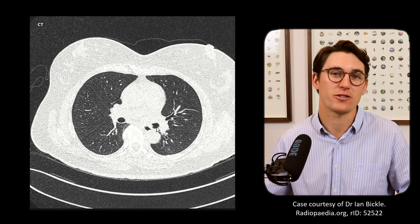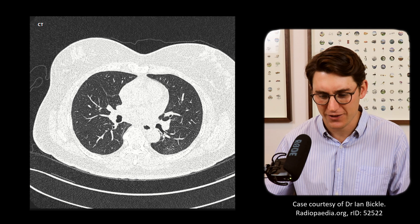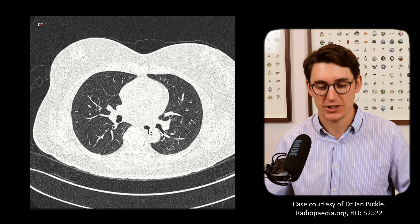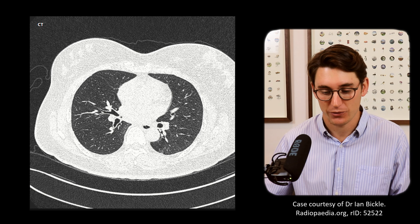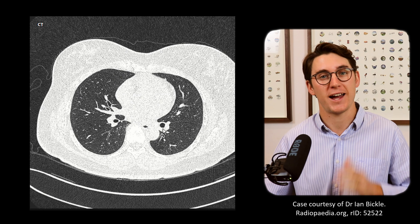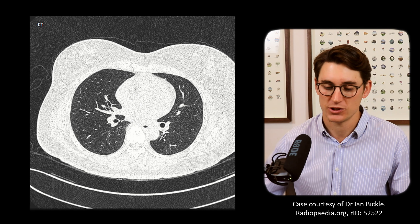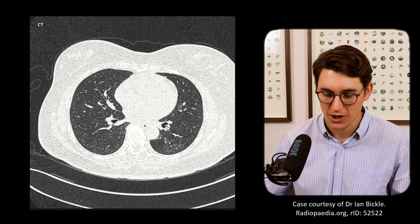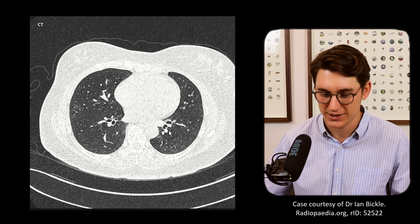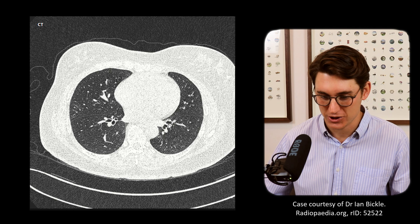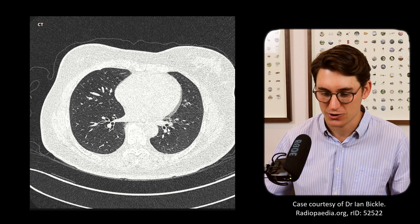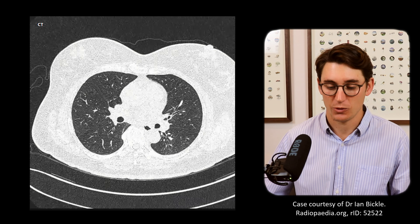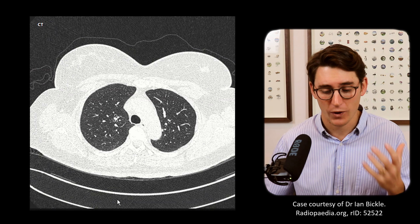Following the left lower lobe bronchus, again posteriorly and quite early on we have the superior segment on the left, just as on the right. Continuing further down we see the anteromedial branch before it bifurcates into medial and anterior, then the lateral branch, and finally the posterior branch. We can follow each of those all the way out to the lung peripheries.